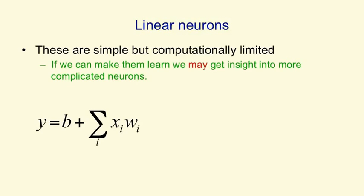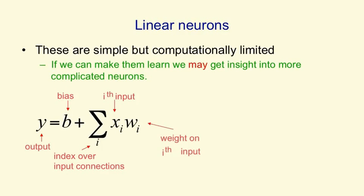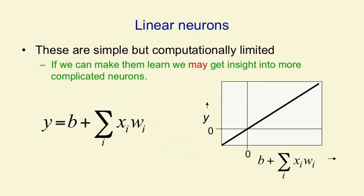So in a linear neuron, the output y is a function of a bias of the neuron, b, and the sum over all its incoming connections of the activity on an input line times the weight on that line. That's the synaptic weight on the input line. And if we plot that as a curve, then if we plot on the x-axis the bias plus the weighted activities on the input lines, we get a straight line that goes through zero.